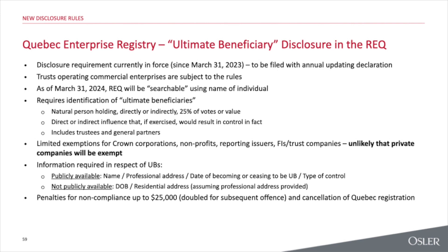In addition to the 25% votes-or-value test, there is a de facto control test: if an individual has the ability to exert influence amounting to de facto control, that person is also an ultimate beneficiary. This includes trustees and general partners. There are limited exceptions for crown corporations, government corporations, some not-for-profits, reporting issuers, financial institutions, and certain trust companies — but a plain vanilla private company OPCO is very unlikely to be exempt.